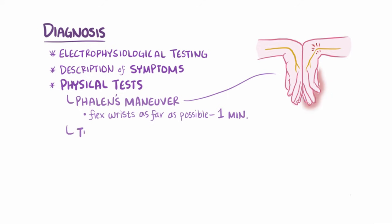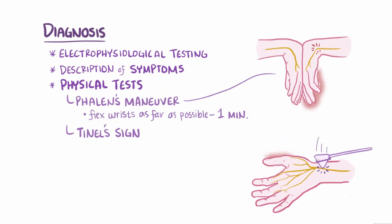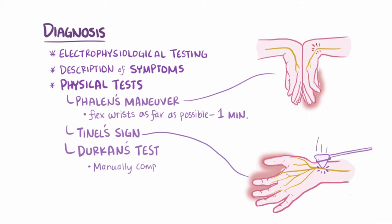Another physical test, Tinel's sign, is performed by tapping the transverse carpal ligament, which reproduces the symptoms of tingling or feelings of pins and needles in areas of the hand served by the median nerve. Finally, there's Durkin's test, which is another way to elicit carpal tunnel symptoms, but this time by manually compressing the carpal tunnel with the thumb for 30 seconds.